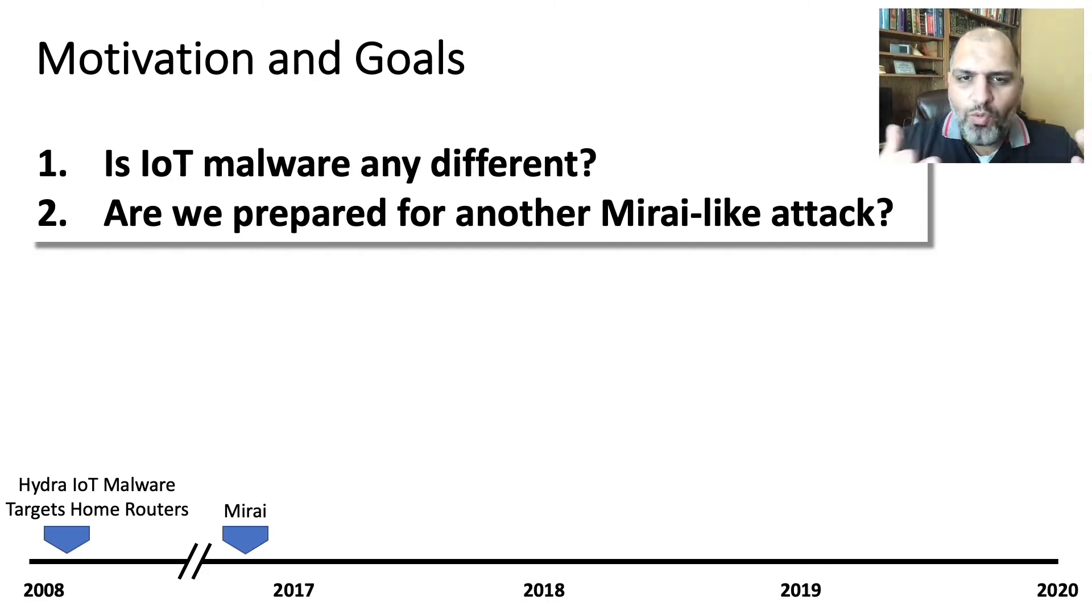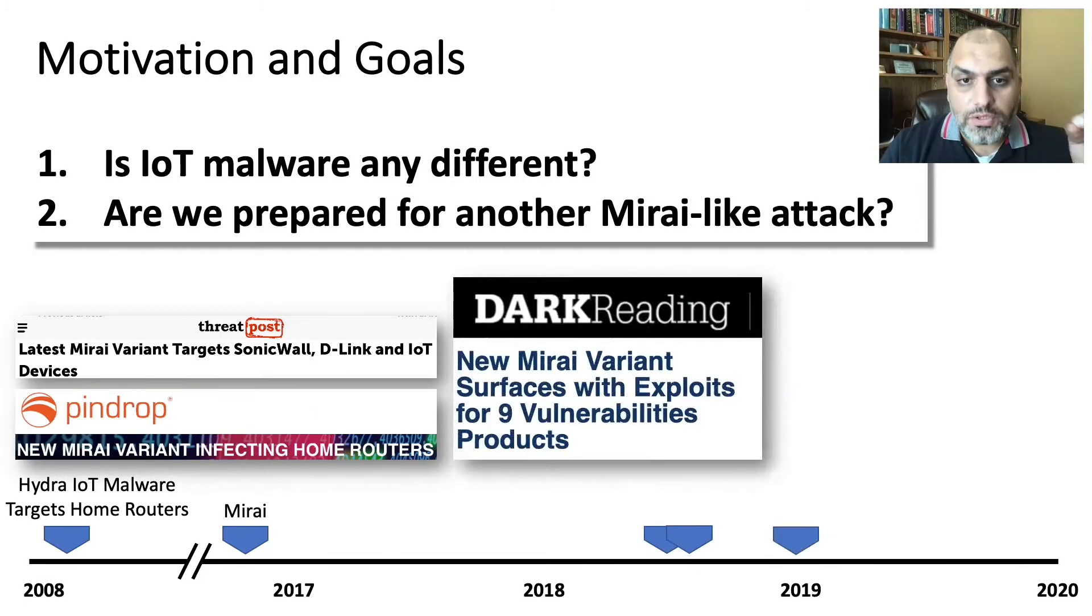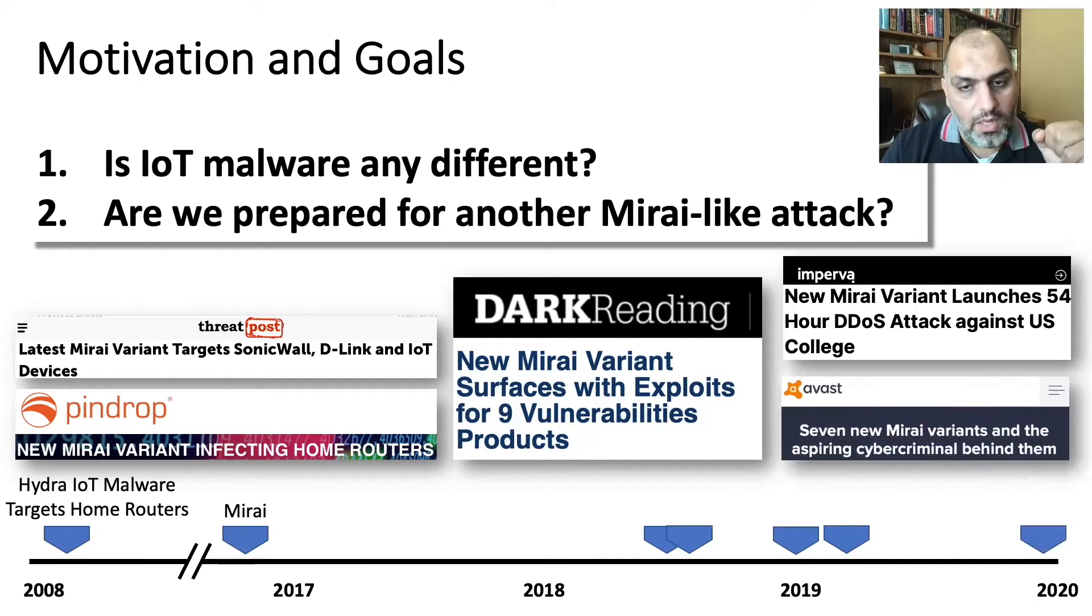So why are these questions important and why are we asking them now? Well, anecdotally, we are seeing an evolution in IoT malware. Specifically, we're seeing new targeting of firewall devices, home routers, TVs, DVRs, and other devices. We're even witnessing an evolution in attacks and their targets.